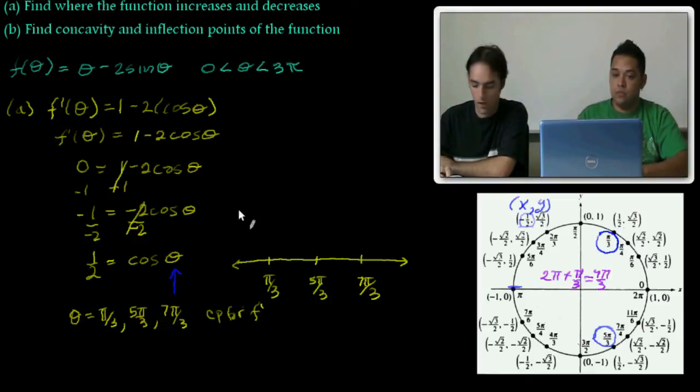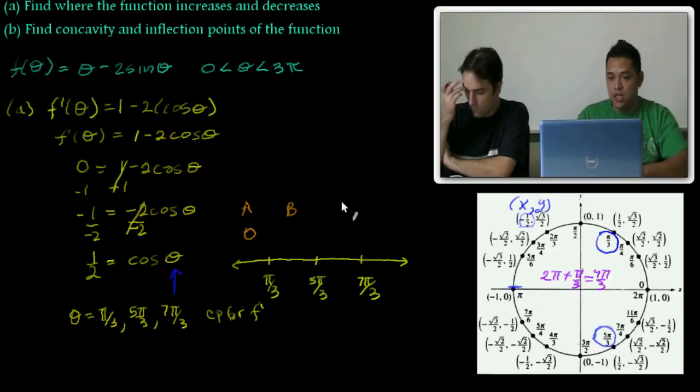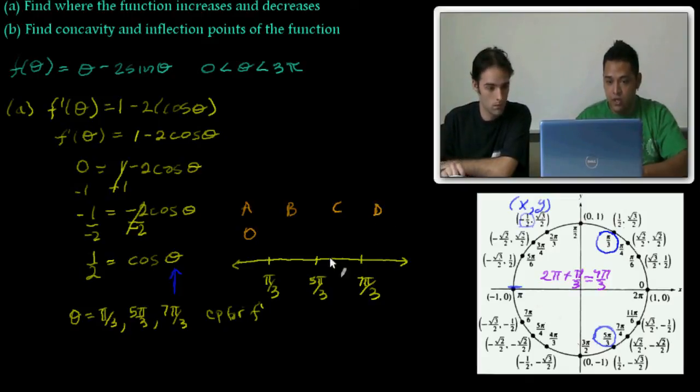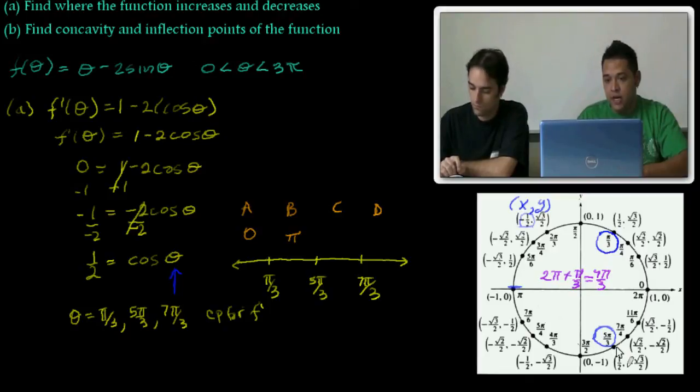To the left of pi over 3, I chose 0. Let's call that region A. The regions between these would be B, C, and D. Between pi over 3 and 5 pi over 3, I chose pi. Between 5 pi over 3 and 7 pi over 3, I chose 2 pi.